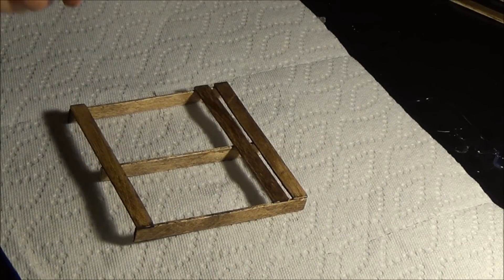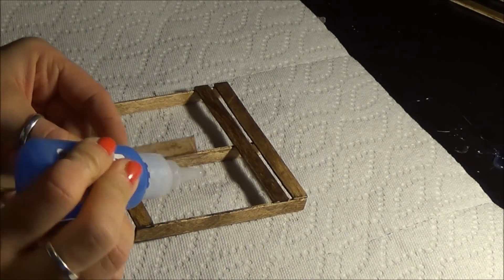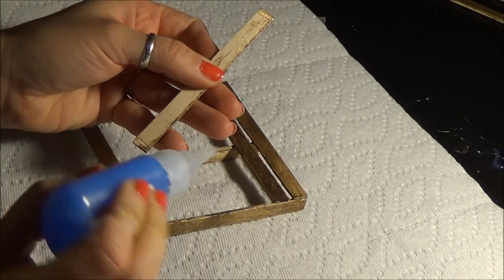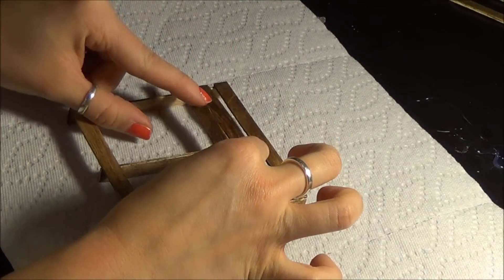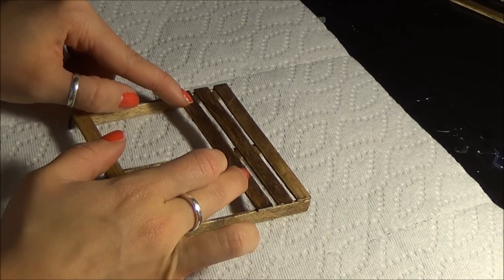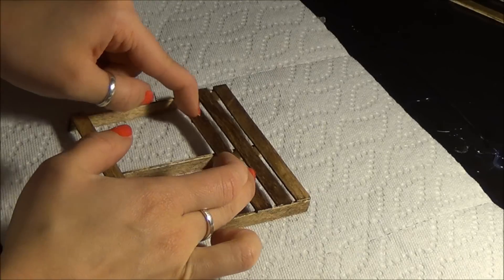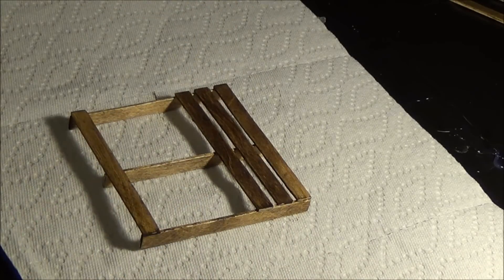You'll now want to just simply take the popsicle sticks and lie them across. So I'm going to place some crazy glue right here and right here. And then I'm going to place it, and you just need to make sure you space them about the same. It doesn't need to be perfect because, honestly, palettes are not perfect. So just put a little pressure, and then it will sit there and dry.